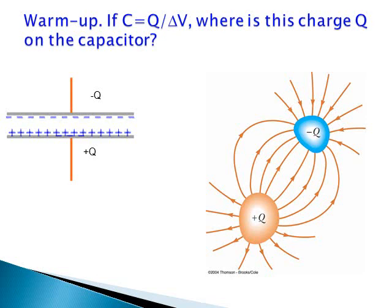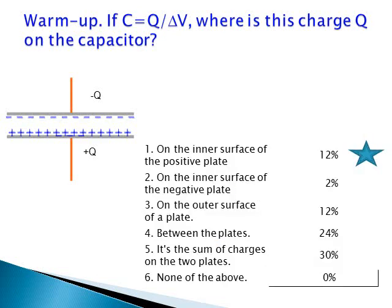Inside the conducting plates, charges will move as close to the oppositely charged plate as possible. The correct answer to this question is one. The charge plus Q that goes into the capacitance is located on the inner surface of the positively charged plate.